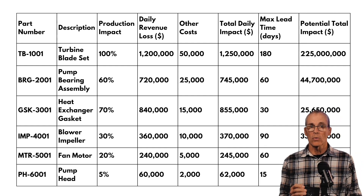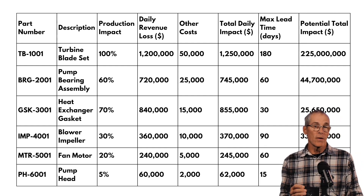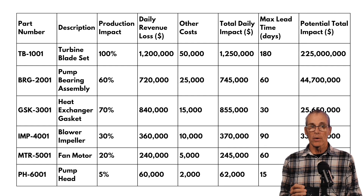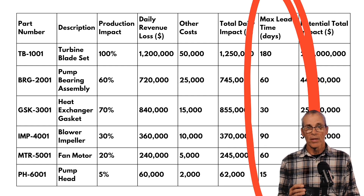On the right-hand side you can see that $225 million figure. This helps the CFO of your company figure out whether you need to buy a spare set of turbine blades.